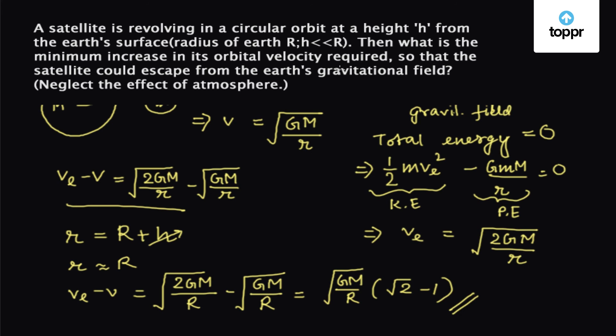So the increase in orbital velocity required to escape the Earth's gravitational field for the satellite is given by root over GM upon R times (√2 minus 1), where capital M is the mass of the Earth.